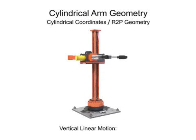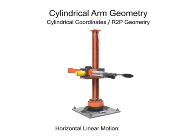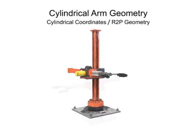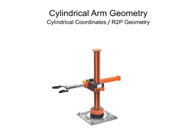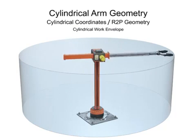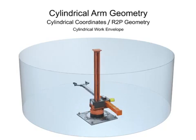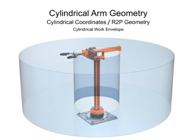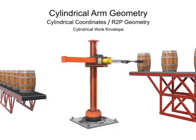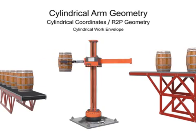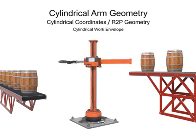Vertical linear motion is called stroke. Horizontal linear motion is called reach. And rotational motion is called swing. Cylindrical geometry robots have a cylindrical work envelope. The advantage of this type of work envelope is a robotic arm reach that is deep at both the top and bottom of the stroke. Additionally, the robot's structure allows for quick movements with high repeatability, a smaller use of floor space, and a larger payload capacity due to structural rigidity.